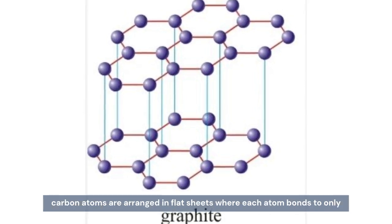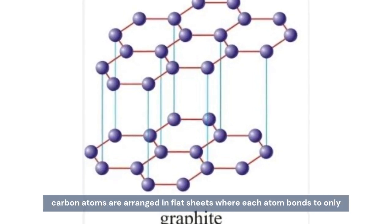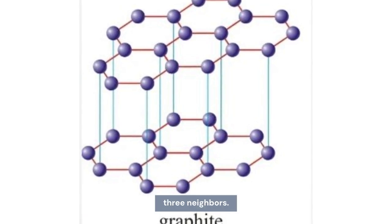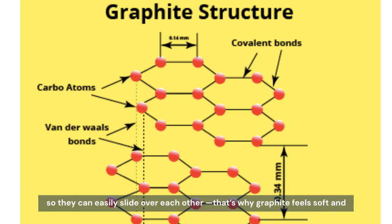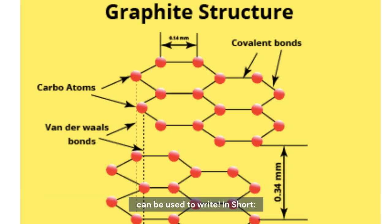In graphite, carbon atoms are arranged in flat sheets where each atom bonds to only three neighbors. The sheets are held together by weak forces, called van der Waals forces, so they can easily slide over each other. That's why graphite feels soft and can be used to write.